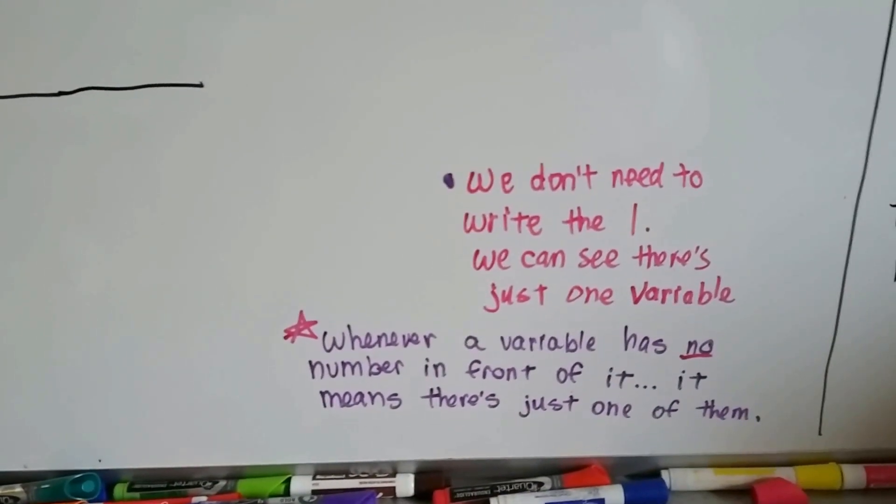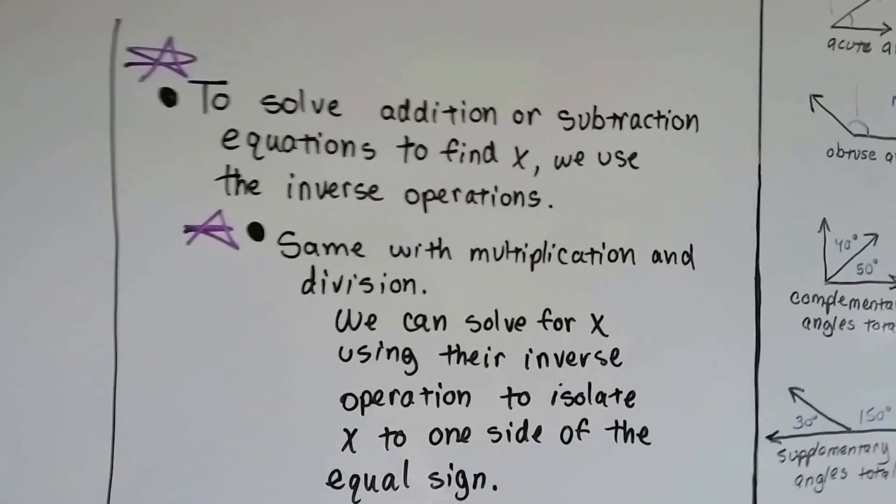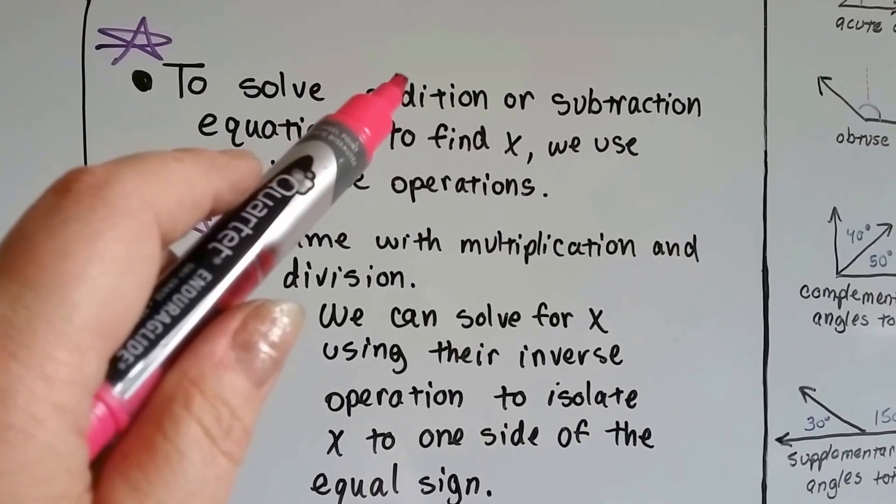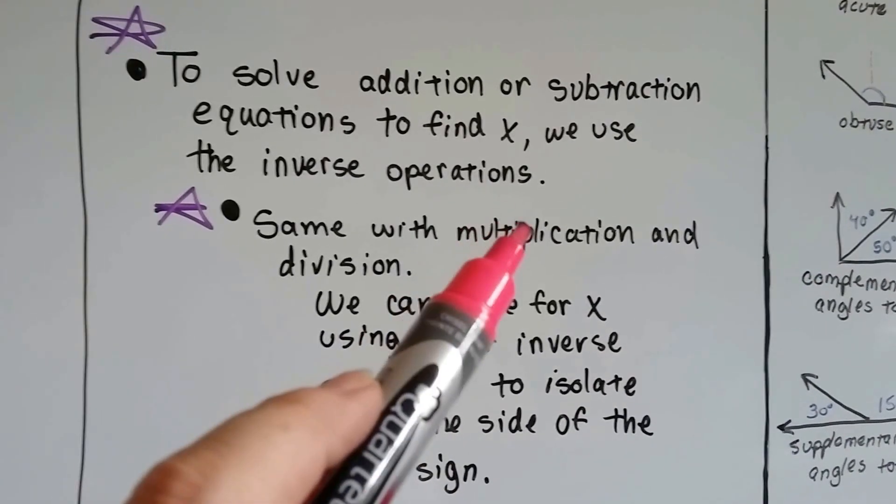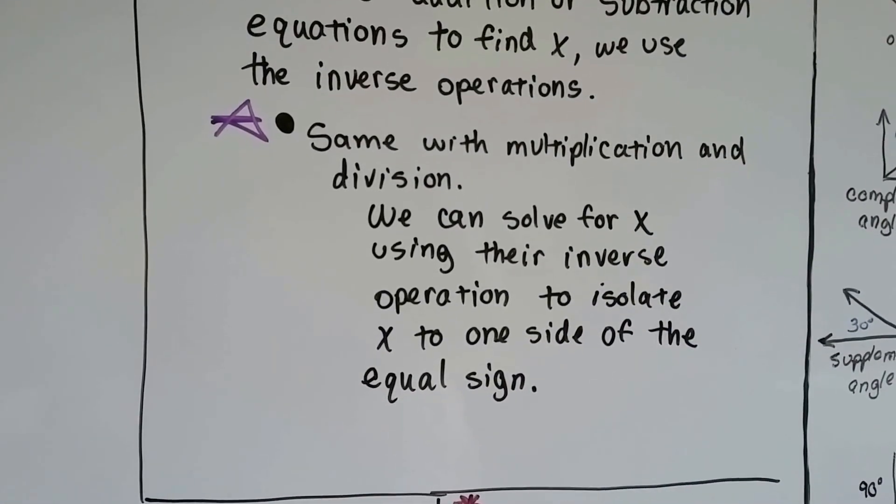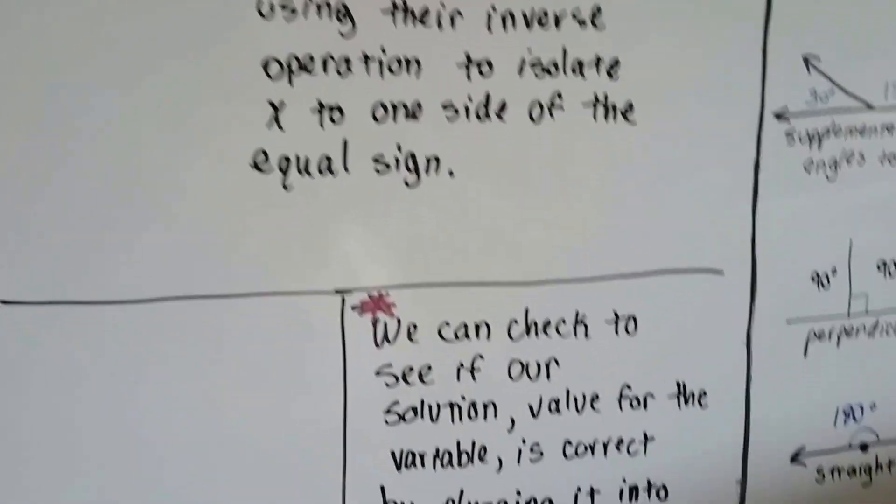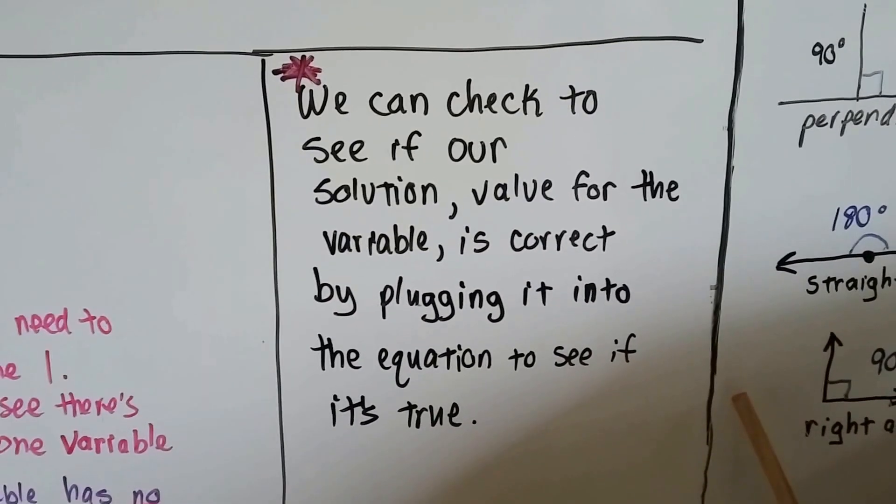Whenever a variable has no number in front of it, it means there's just one of them. Remember that to solve addition or subtraction equations to find x, we use the inverse operation. Addition uses subtraction, subtraction uses addition, and the same with multiplication and division. Multiplication uses division, and division uses multiplication, like right here. We can solve for x using their inverse operation to isolate x to one side of the equal sign, and we can check to see if our solution, the value for the variable, is correct by plugging it into the equation to see if it's true.